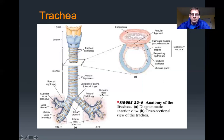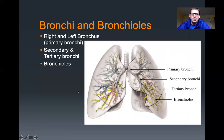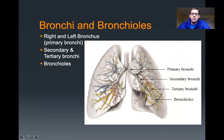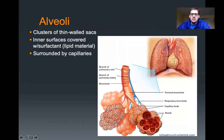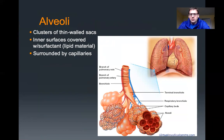Here's the trachea going down, and it eventually branches into what are called the primary bronchi — a right bronchus and a left bronchus going into each lung. Those further branch off into secondary bronchi, which further branch off into tertiary bronchi, and finally into these microscopic tiny little tubes called bronchioles. When you breathe in, air comes down through the pharynx, larynx, trachea, and then through all these branches — primary, secondary, tertiary bronchi and bronchioles. At the end of the bronchioles are tiny thin-walled air sacs called alveoli, whose inner surfaces are covered with surfactant, a lipid-like material that helps to hold those alveoli open.